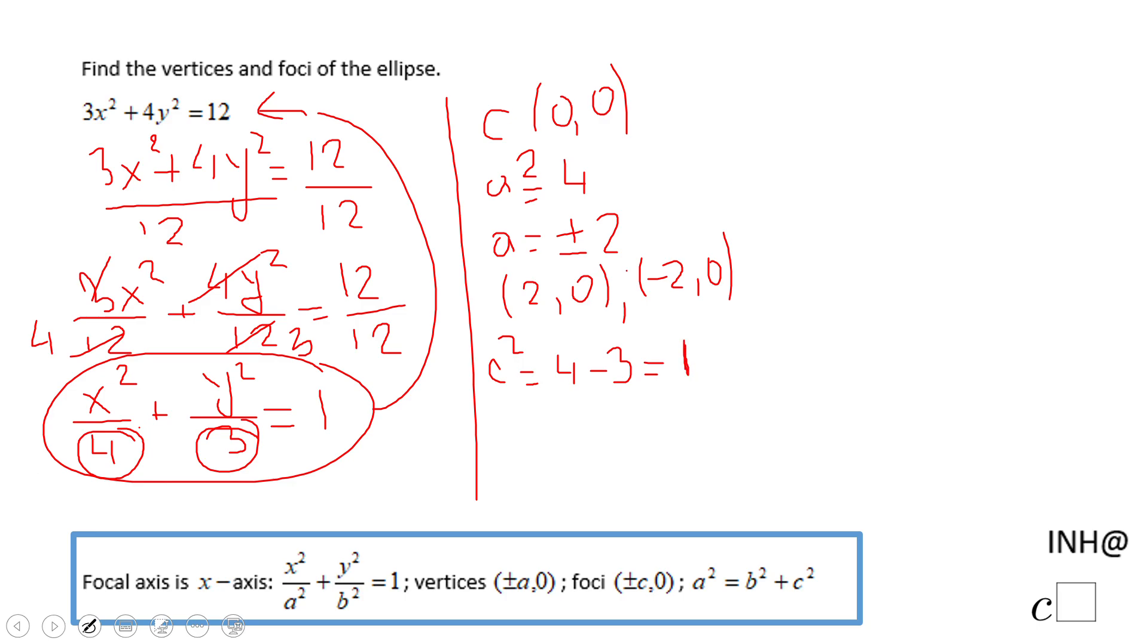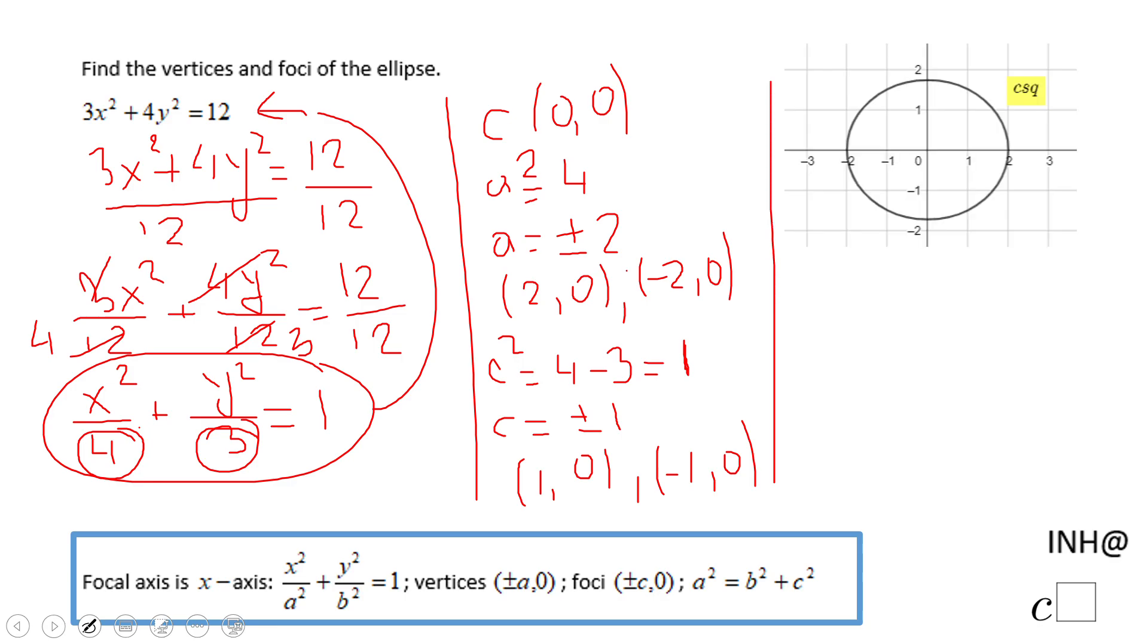Which allows us to find c as ±1, and the foci are (1,0) and (-1,0), which allows me now to see a graph if you want, and you can see a graph here.